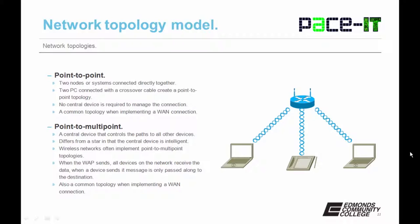Now let's move on to the point-to-point topology, where two nodes or systems are connected directly together. If you're talking about two PCs, they use a crossover cable to create a point-to-point topology — there's no central device to manage the connection. This is still a common topology when implemented across a WAN connection utilizing a T1 line. Point-to-multipoint differs: a central device controls the paths to all other devices, and that central device is intelligent, unlike in a star topology.